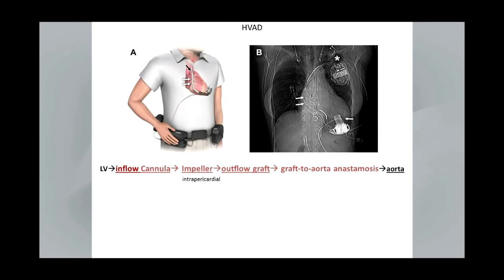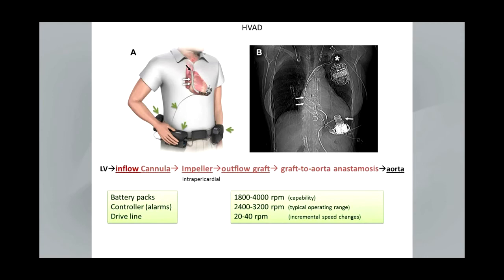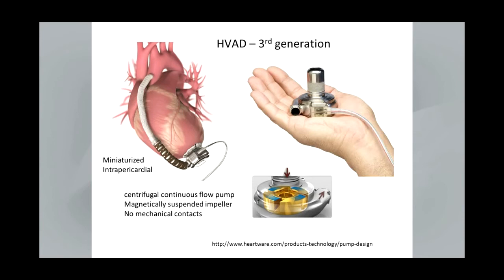The HVAD is a third-generation device approved for bridge-to-transplantation currently. It operates at lower RPM speeds and is a third-generation device because, unlike the axial flow pump, there's no physical mounting of the impeller — this is a centrifugal flow device. The disc is magnetically suspended so there's no mechanical contact, which has implications with regards to physiology, how it impels blood, and durability. The HeartMate 2 device is below the diaphragm, while the HVAD is miniaturized and implanted inside the pericardium with the inflow cannula attached to the impeller.